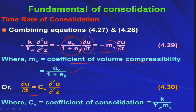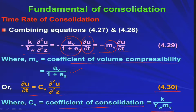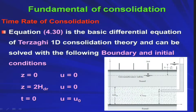We obtain the 1D consolidation equation (equation 4.30): ∂U/∂t = C_v·(∂²U/∂Z²), where C_v is the coefficient of consolidation given by C_v = K/(gamma_w · M_v). This is a partial differential equation — the governing equation of Terzaghi's 1D consolidation theory. To solve it, we need boundary conditions and an initial condition.